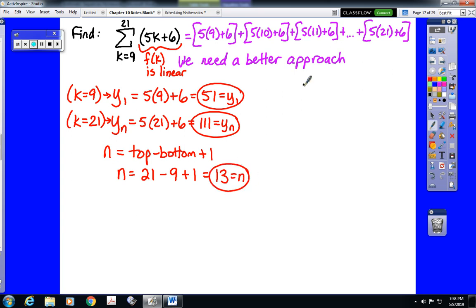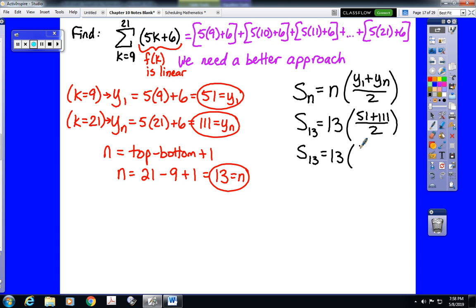From there we are going to approach it as a series problem. Plug in what we know. So we're doing S sub 13, which is 13 times 51 plus 111 divided by 2. And do exactly what we did on the examples in the last video. That's 162 divided by 2, or 13 times 81, which is 1053. That would be this sum.